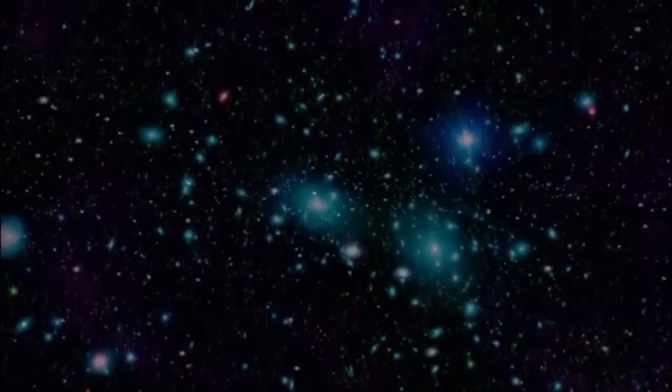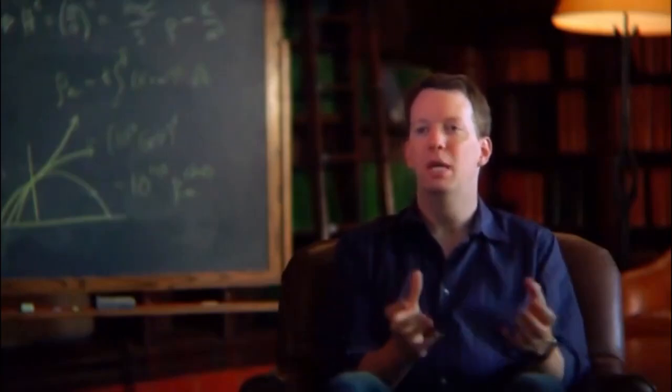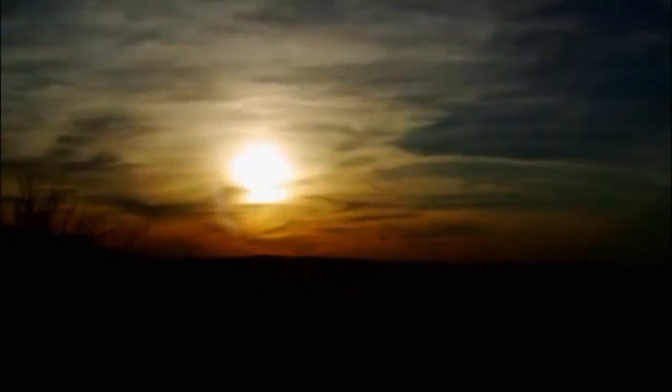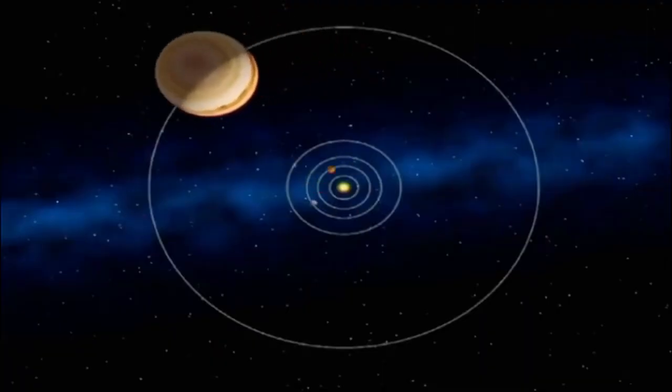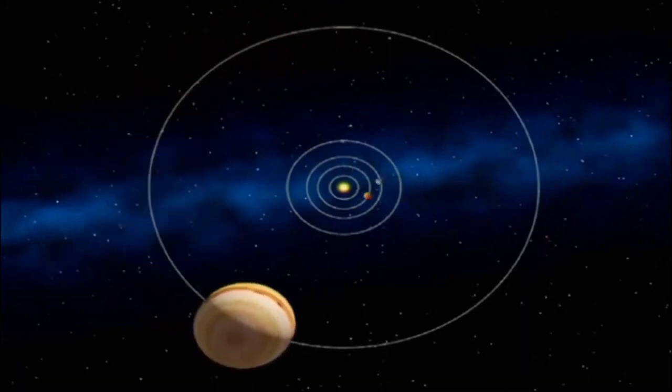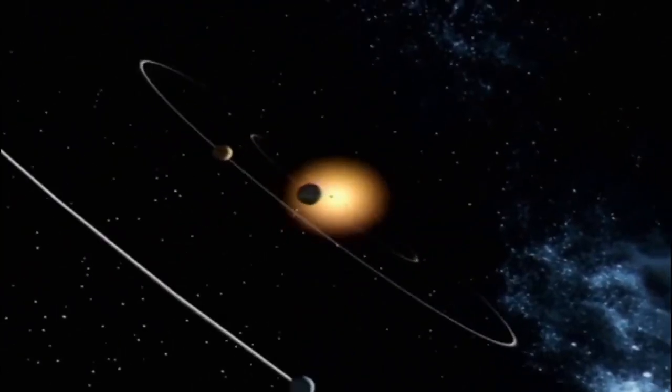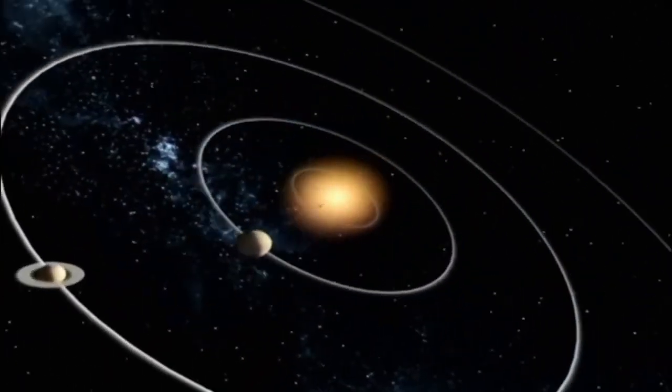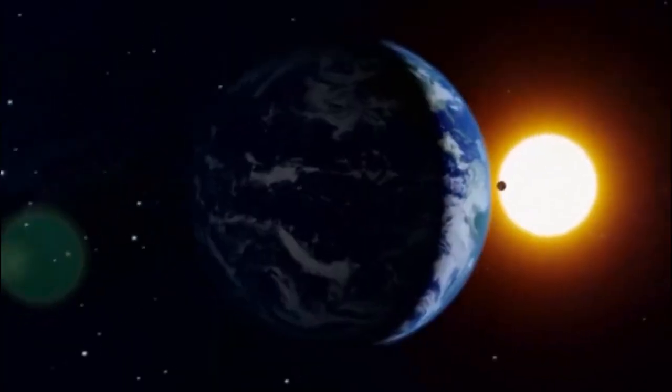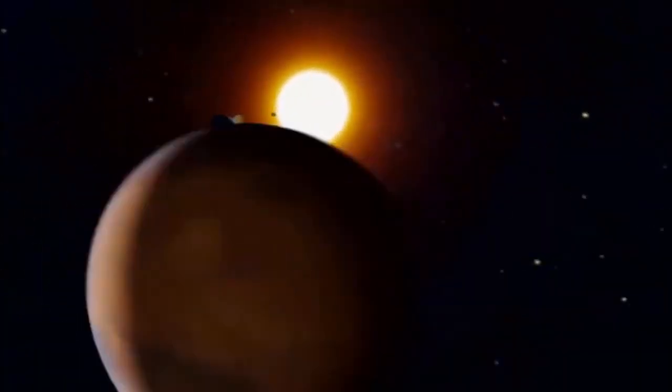But how do you weigh stuff in space? You can't go and put the sun on a scale. It's a little bit harder. But what you can do is you can measure how fast the planets are moving around the sun. And the more stuff there is in the sun, the faster those planets have to move to stay in their orbits. Newton and Einstein both said the more mass or stuff you have in an object, the more gravitational pull it will have. And the further an object is from the center, the slower it should travel in orbit because the gravitational pull is weaker.